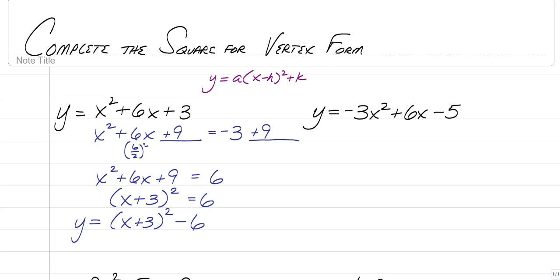So once we complete the square, we can state that our vertex is opposite of what's inside, so we have a negative 3 comma our outside negative 6. And that's how we use completing the square to write an equation in vertex form.